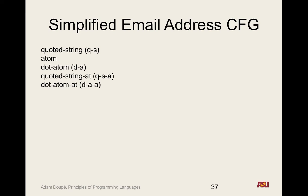At the very high level, our starting production rule has an address as either a name-address or an address specification. I'm going to break these down — I got rid of about a third of the original rules.